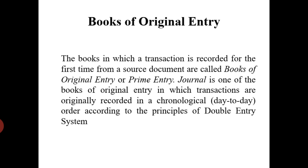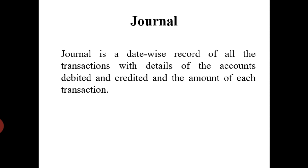Now, the journal entry. Journal is a date-wise record of all the transactions with details of accounts debited and credited and the amount of each transaction. All transactions have dual effect — one part is debited and the second is credited. You need to see which one should be debited and which one should be credited, and each account will be recorded in the book of journal entry.